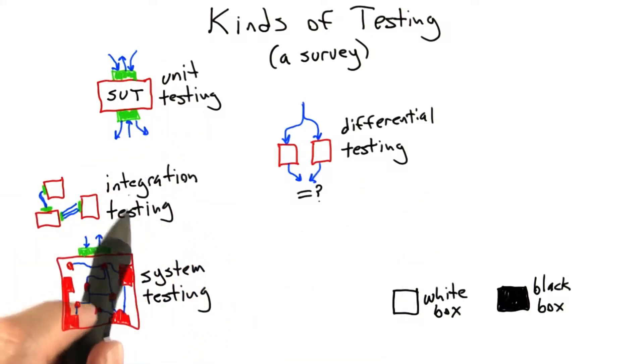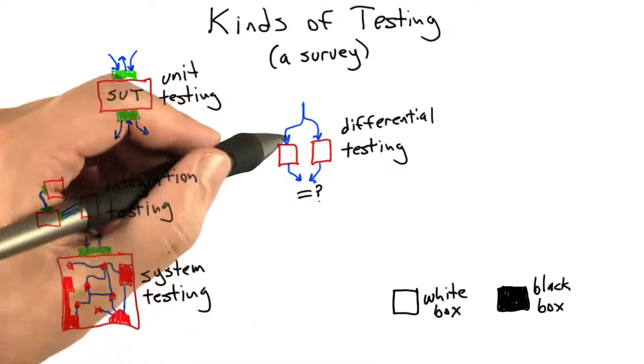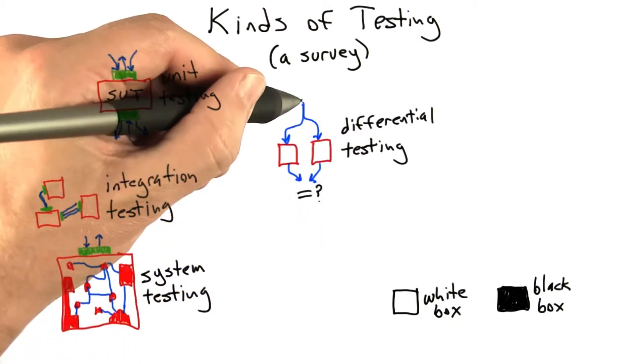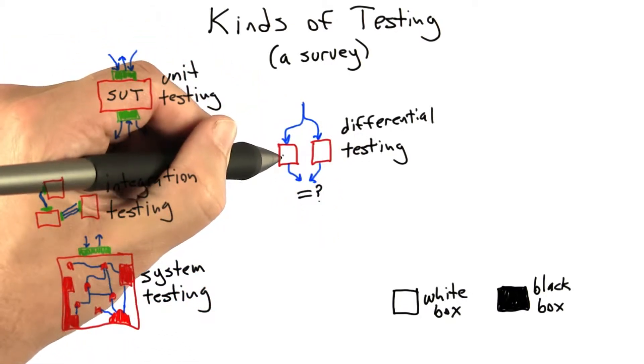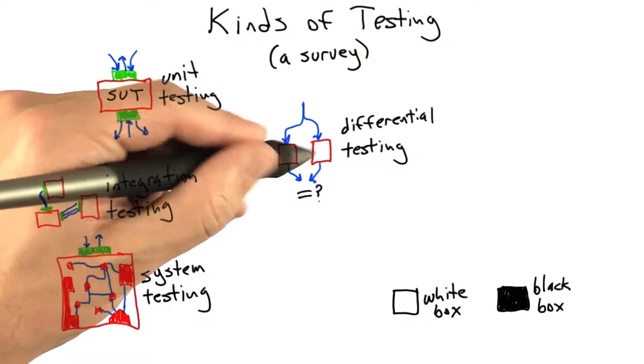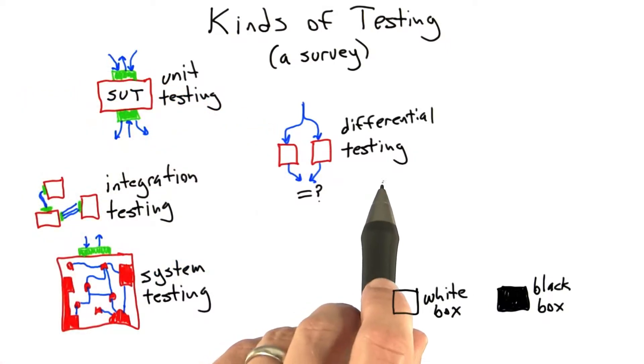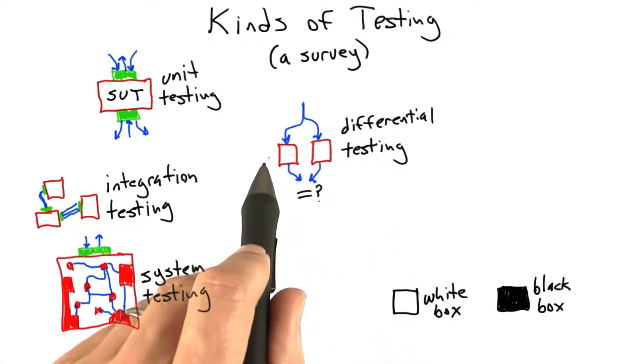Somewhat orthogonal to unit testing, integration testing, and system testing is a testing technique called differential testing. In differential testing, we take the same test input, deliver it to two different implementations of the software under test, and compare them for equality. Differential testing is extremely powerful when we have multiple versions.